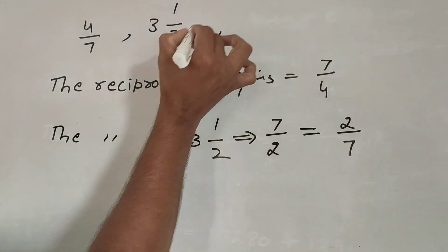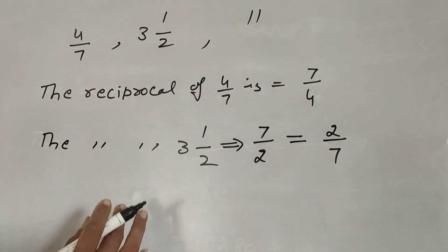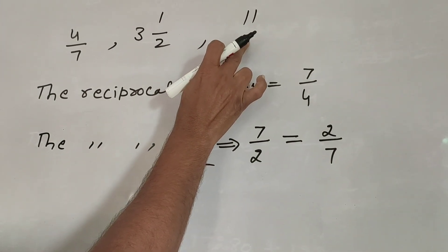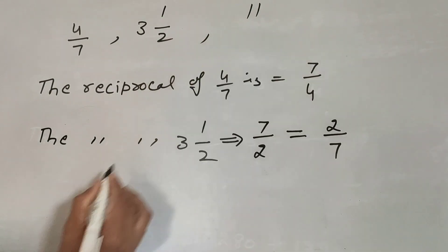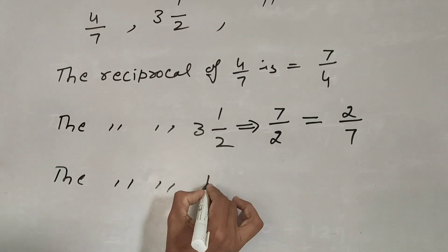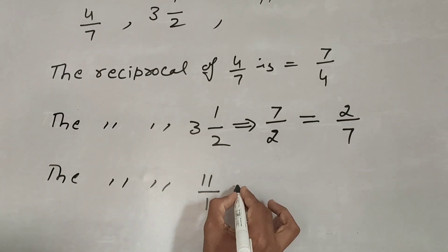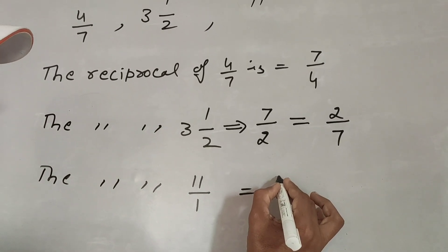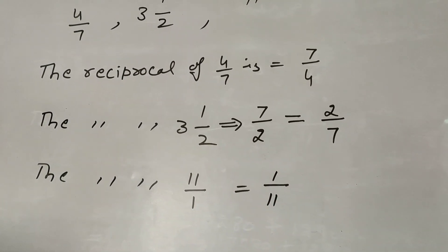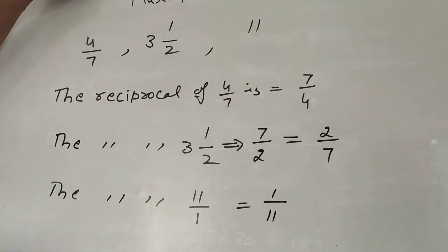Third example: here 11 is a whole number. We want the reciprocal of this. The reciprocal of 11 — we write it with denominator 1, so the reciprocal fraction is 1 by 11.